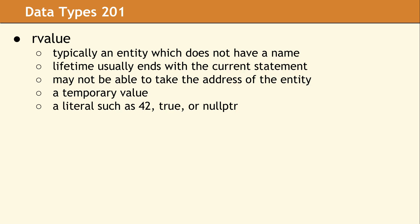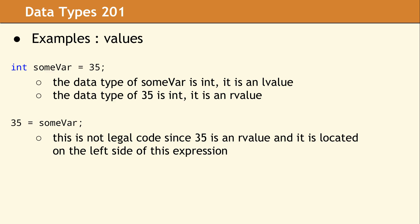An R value. This is typically a temporary expression. Something like 42 or true or null pointer. It doesn't have a name and you cannot take the address of it. So in this first example, someVar is a data type of int and it has a value category of L value. It has a name and you can take the address of it. 35 is an integer, but it is an R value category. In this second example, we're assigning someVar to 35. And any programmer will recognize that this isn't legal code. But the question is, why is it not legal? And the reason why this particular line of code is not legal is because 35 is an R value and it's located on the left side of the expression. R values are not valid targets for assignment.